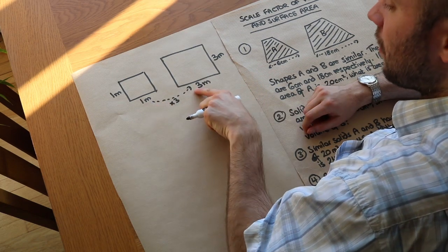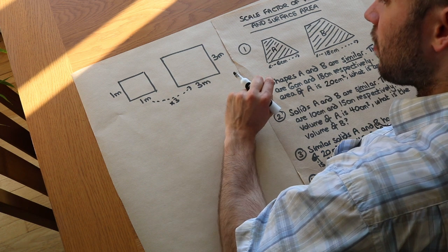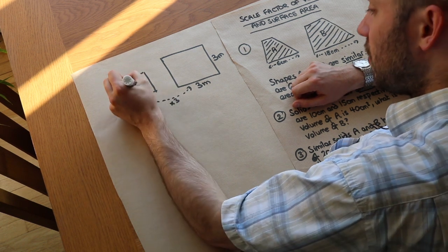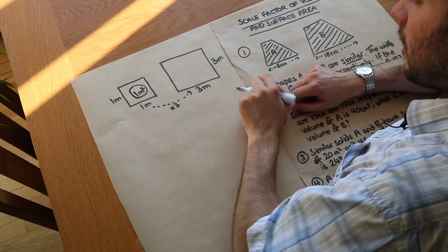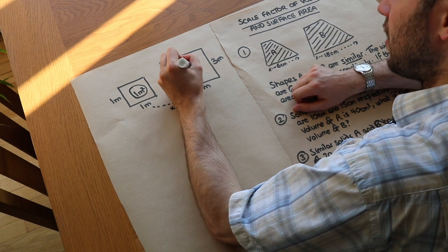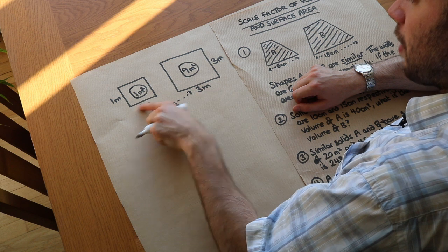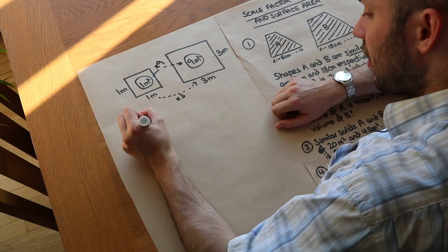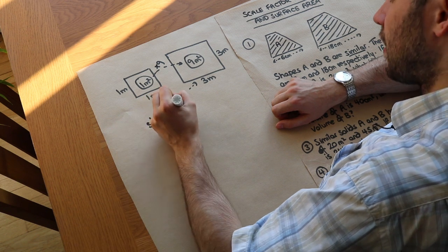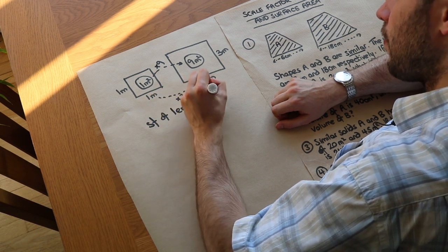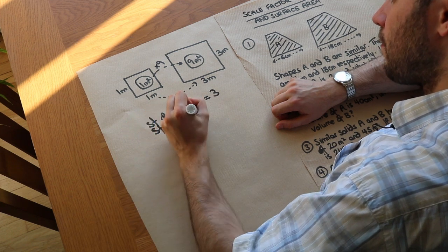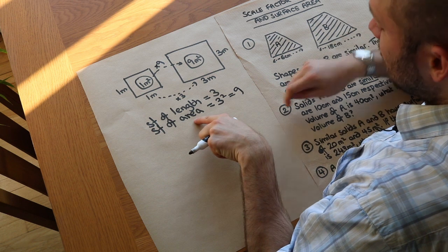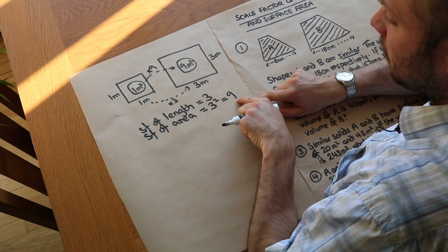The scale factor of length is three because it's three times bigger. But what's the scale factor of area? The area of a square is width times height, so the area of the small square is one times one which is one metre squared. The area of the larger square is three times three which is nine metres squared. So even though the lengths got three times bigger, the area actually got nine times bigger. We write this as: scale factor of length Sf equals three, and the scale factor of area equals three squared which is nine. So to find the scale factor of area you just square the scale factor of length.